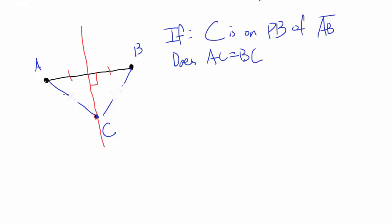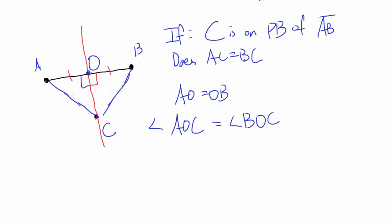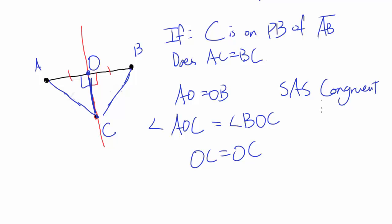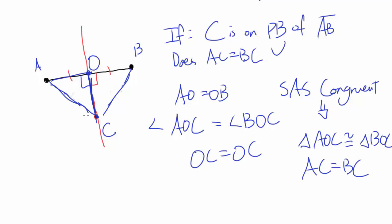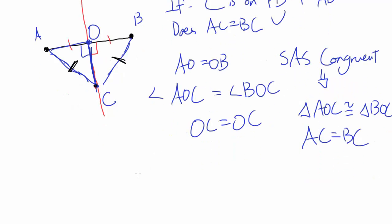Let's explore this. Let's call the midpoint O. We know AO is equal to OB. We know both angles are right angles, so angle AOC is equal to angle BOC. And OC equals itself. So we have SAS congruency — triangle AOC is congruent to triangle BOC. And this tells you AC is equal to BC. So yes: if a point is lying on a perpendicular bisector, it is equidistant from the endpoints of the segment.